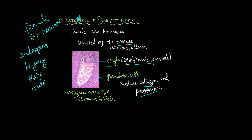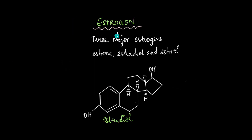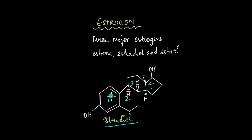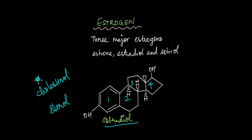Let's take a look at estrogen and talk about some of its functions. Estrogen includes three major hormones: estrone, estradiol, and estriol. This is the structure of estradiol. As you can see, there are four fused ring structures that make up estradiol, because this is a sterol hormone, which means that it is derived from cholesterol — much like the other androgens we saw in the previous video.